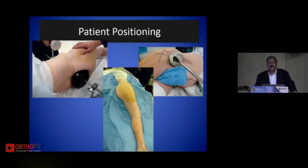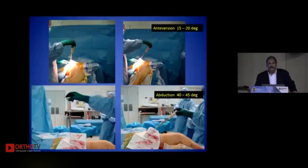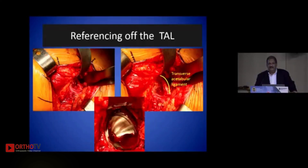Whichever approach you choose — posterior, anterior lateral, or Hardinge — we're not going to cover DAA as it's not yet popular in this part of the world. Looking at the patient from the bottom end is where you set the anteversion, which is 15 to 20 degrees, while looking at the patient from the back is how you fix the inclination or abduction — 40 to 45 degrees. The transverse acetabular ligament (TAL) is crucial in restoring version and is a landmark present in most hips, whether complex primary or revision.